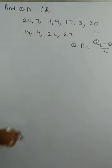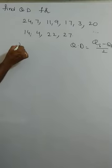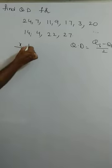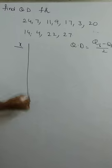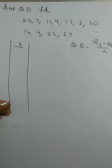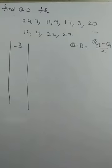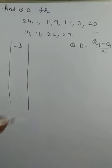To find the quartile, the data should be arranged in ascending order. First, the data should be arranged in ascending order, then you find how many observations there are.